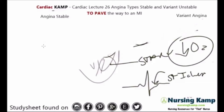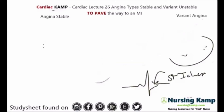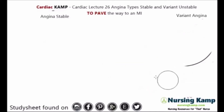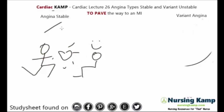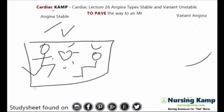There are three types of angina and we're going to differentiate them. The first is stable angina, which is repeatable. If the person is walking and they have chest pain, they stop, and the chest pain goes away.